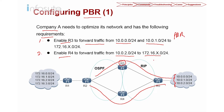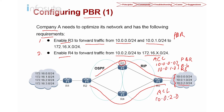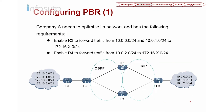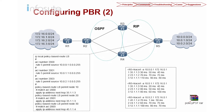For PBR, we first configure ACL to match 10.0.0.0 and 10.0.1.0. Once matched, we configure the policy-based route and apply the next hop to R3. Similarly for 10.0.2.0, we configure ACL to match it, and if the source matches, the next hop is Router 4. We will configure on R5 using ACL 2000, 2001, and 2002 to match these three sources.